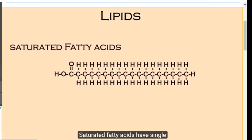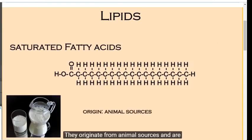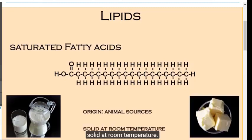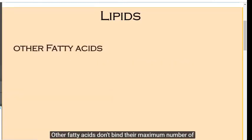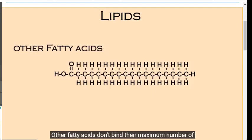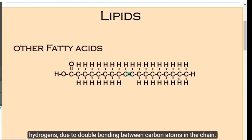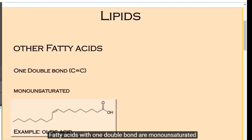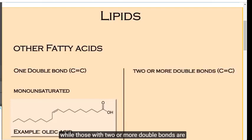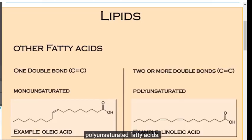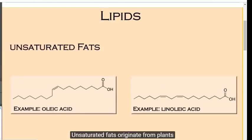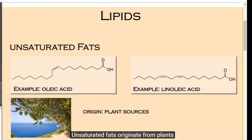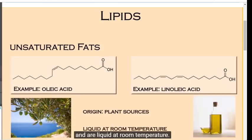Saturated fatty acids have single bonds between the carbon atoms. They originate from animal sources and are solid at room temperature. Other fatty acids don't bind their maximum number of hydrogens due to double bonding between carbon atoms in the chain. Fatty acids with one double bond are monounsaturated, while those with two or more double bonds are polyunsaturated fatty acids. Unsaturated fats originate from plants and are liquid at room temperature.